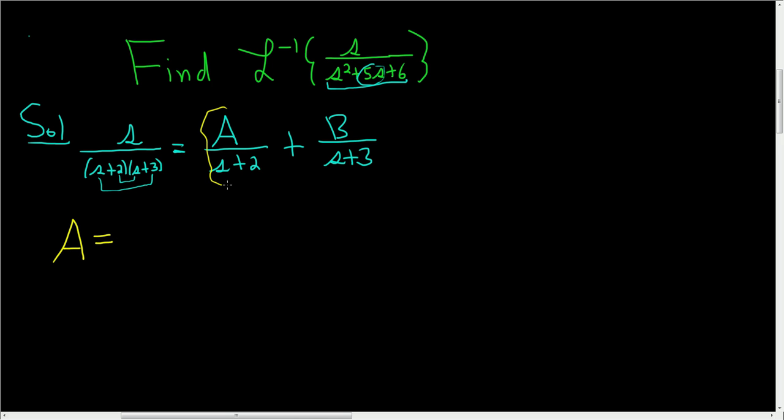So to find a you look here, you say, okay what's under a? Well s plus 2 is under a. Alright, so what makes s plus 2 equal 0? Well negative 2. So negative 2 is the number that makes the bottom 0.